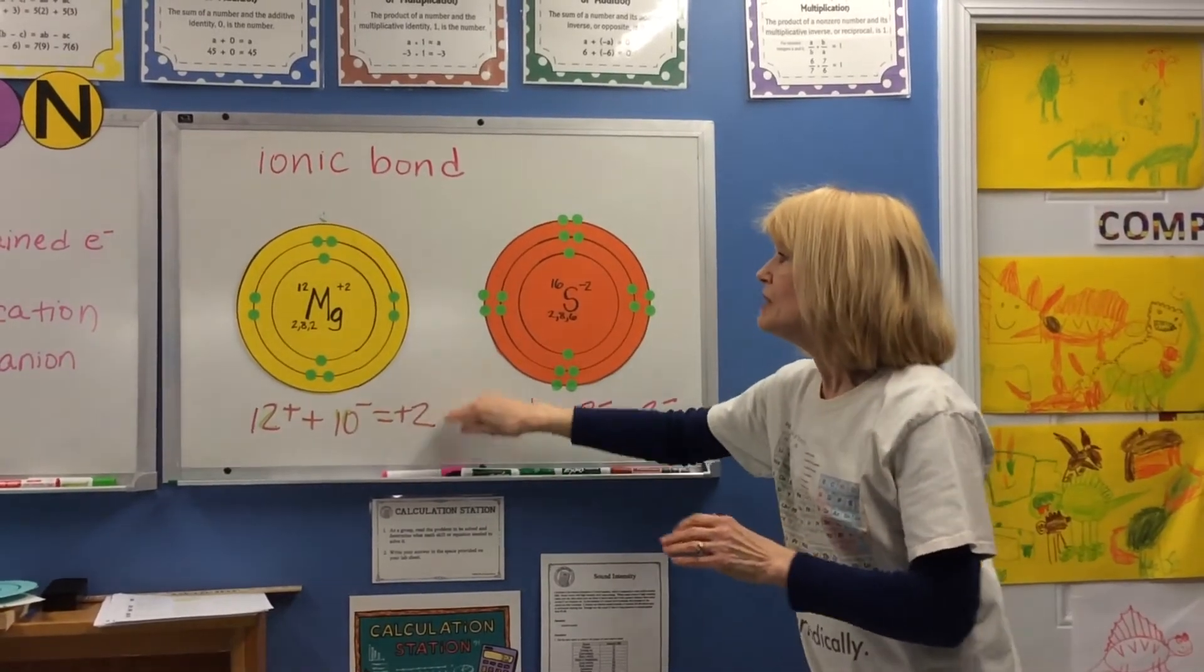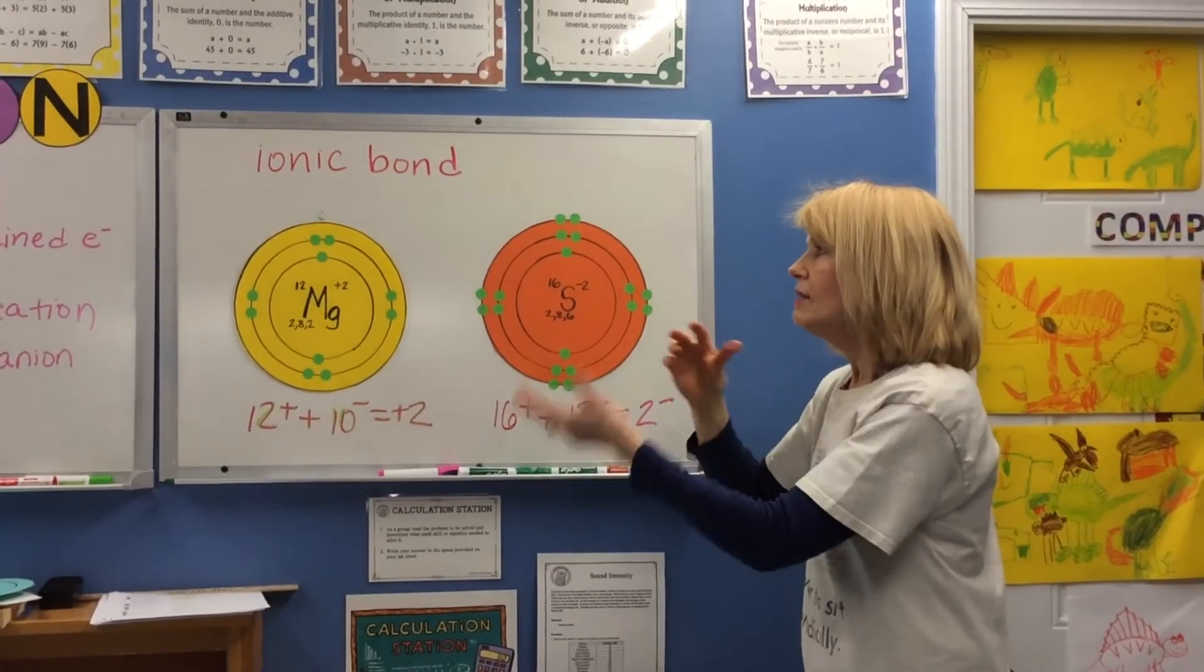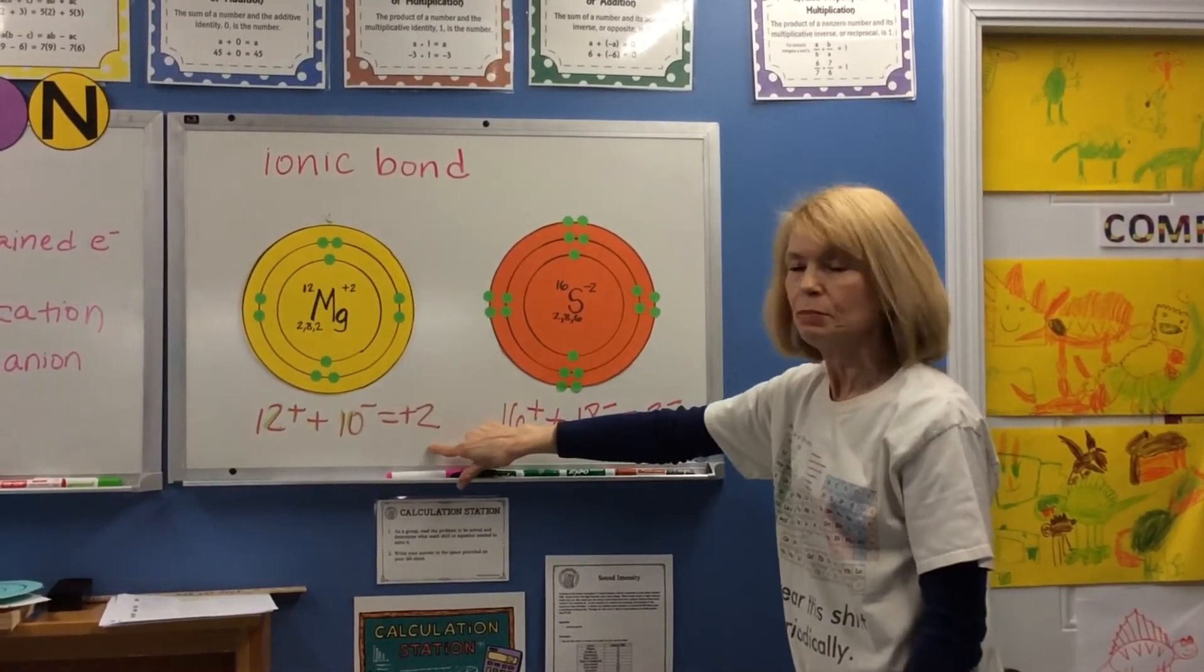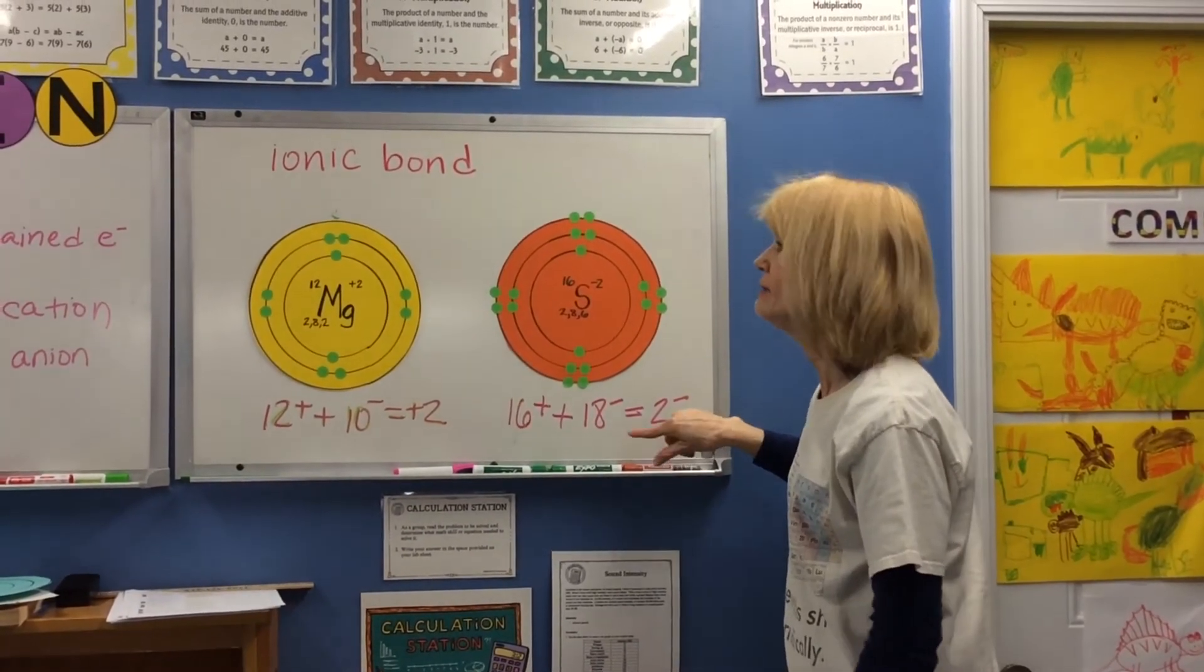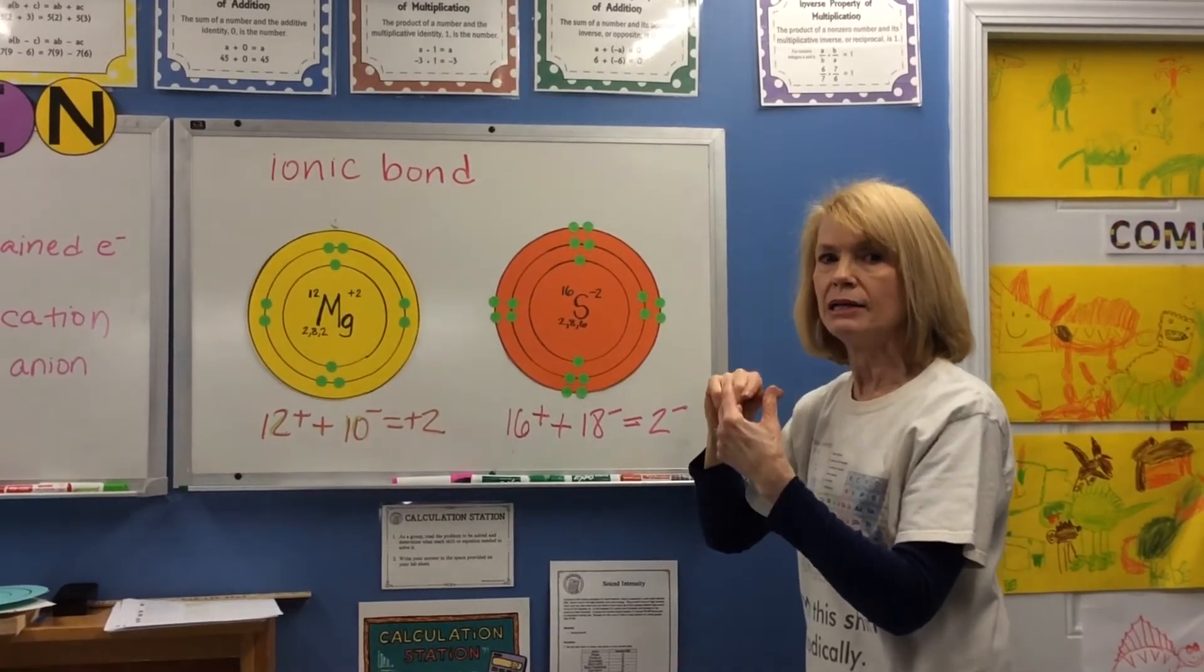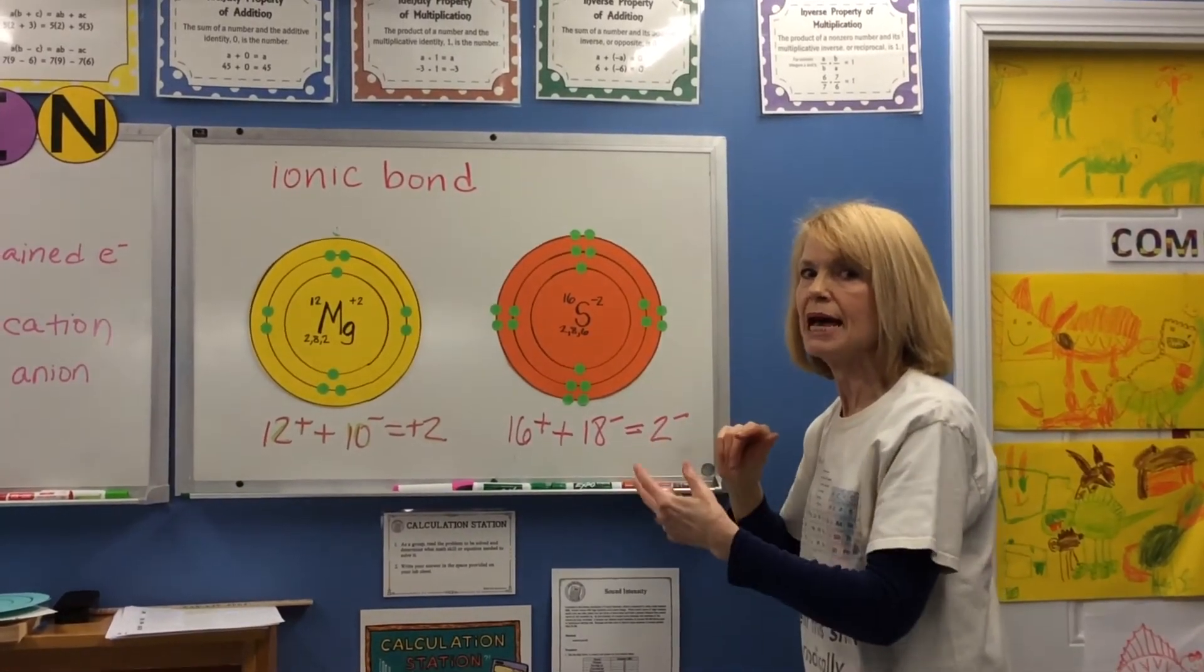These two are attracted to each other. They have exchanged electrons and now this one's positive, this one's negative. They can join together to form an ionic bond because they have opposite charges that match.